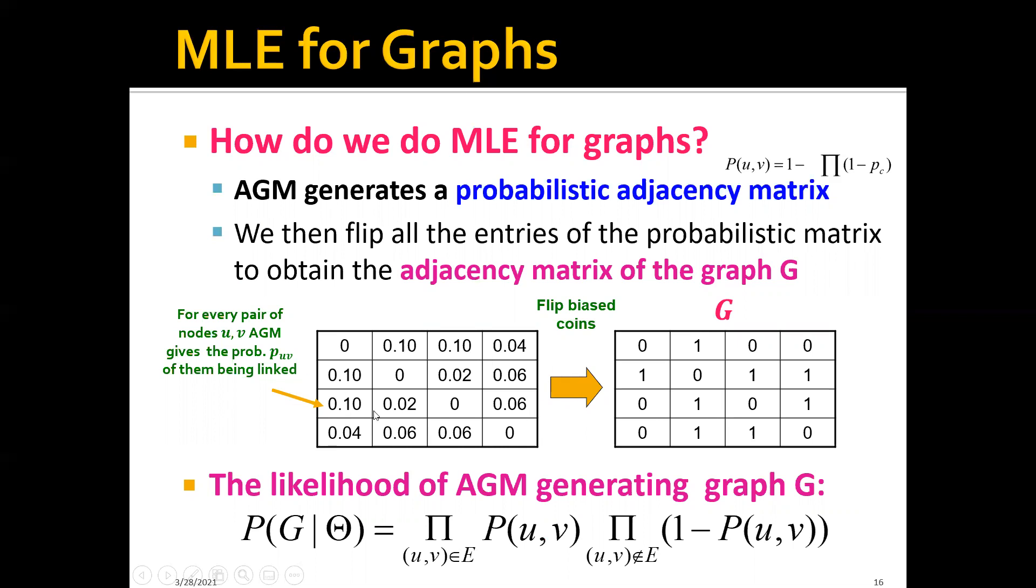For example, we can flip this coin to see whether or not there is an edge between, let's say, node 3 and node 1. And then we can compute the likelihood of the AGM generating the graph using this equation.